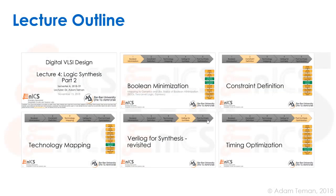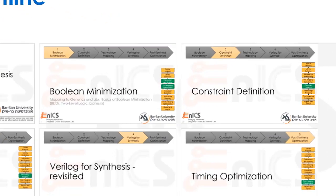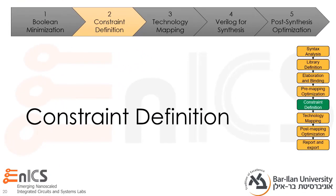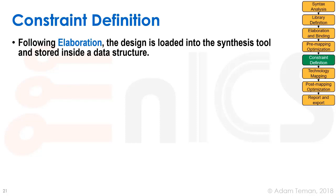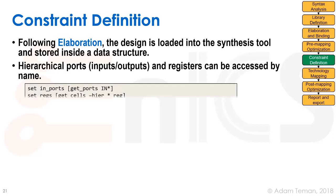That brings us to the next part of the synthesis flow, which is constraint definition. Following elaboration, the design is loaded into the synthesis tool and stored inside a data structure. We now have things such as hierarchical ports, inputs and outputs, registers, and so forth, and we can access them by name.